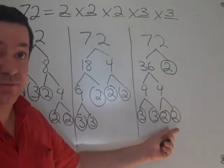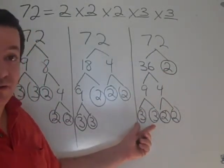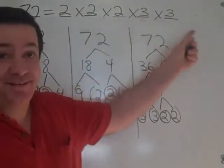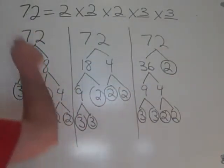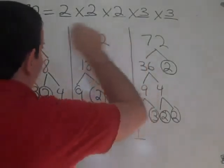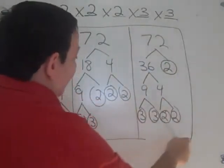Notice, we have 3 2's being multiplied by 2 3's. Exactly the same answer. Now if you look at these 3 factor trees, they look drastically different.